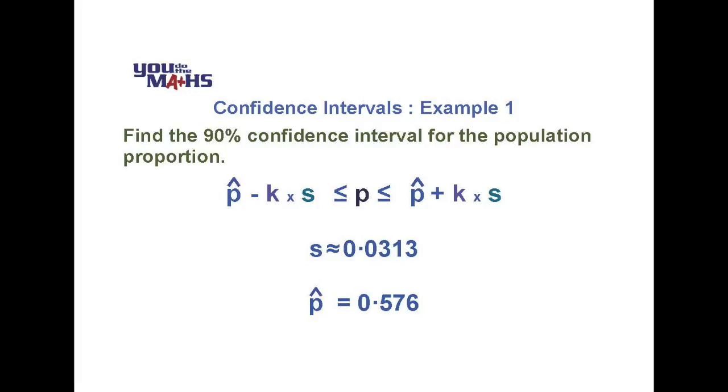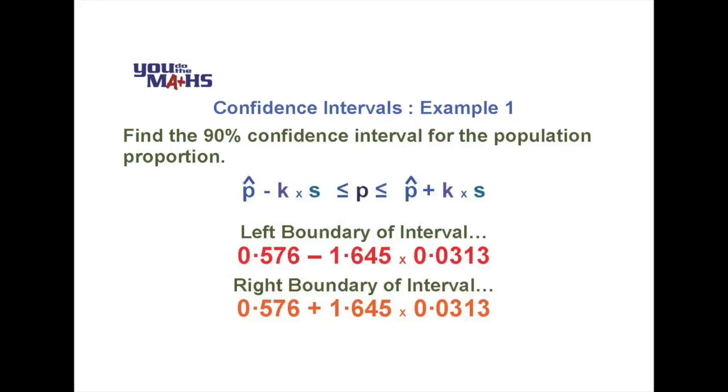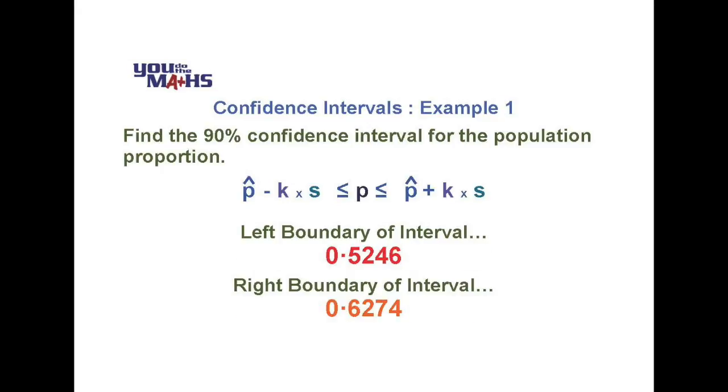As we said before we need 1.645 standard deviations either side of our mean to give us an area of 90% for the normal distribution. So if we substitute all those values into our formula for the confidence interval we find that the left boundary becomes 0.5246 and the right boundary 0.6274.